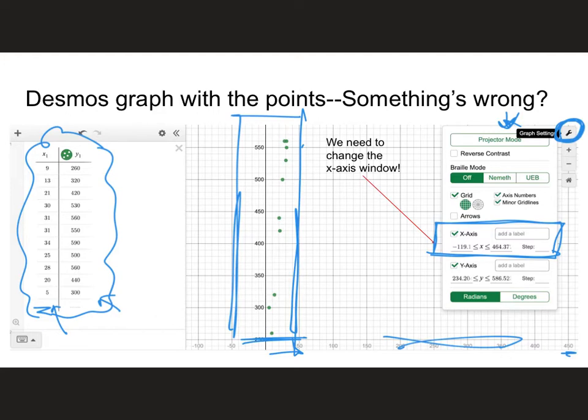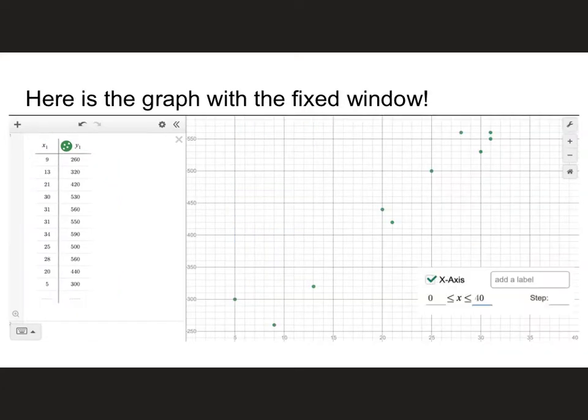If you look at my values for the total grams of fat, my lowest value is 5 and my biggest one's like 34, so there's no need for me to go all the way to 450. We're going to set that x-axis to go from 0 to 40. Once you do that, your graph will look like this. See how your data points are spread across, they're spread across now a lot better.